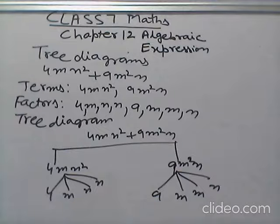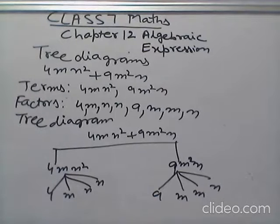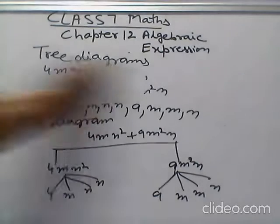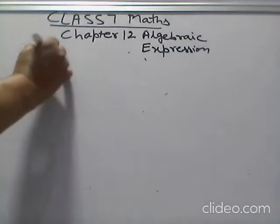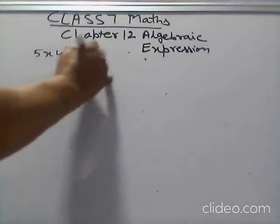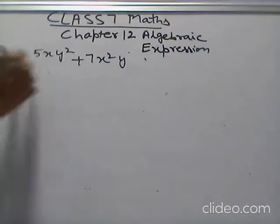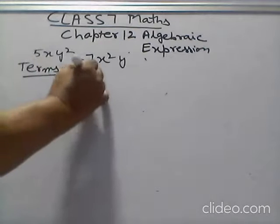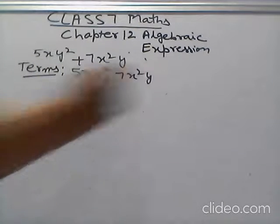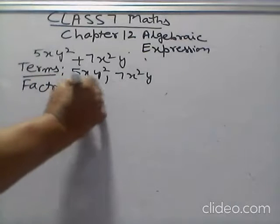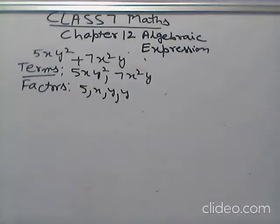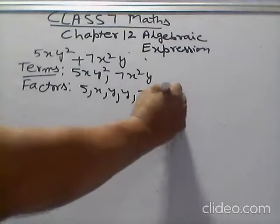Next question. 5xy square plus 7x square y. Terms. 5xy square, 7x square y. Factors. 5xy y, 7x xy.